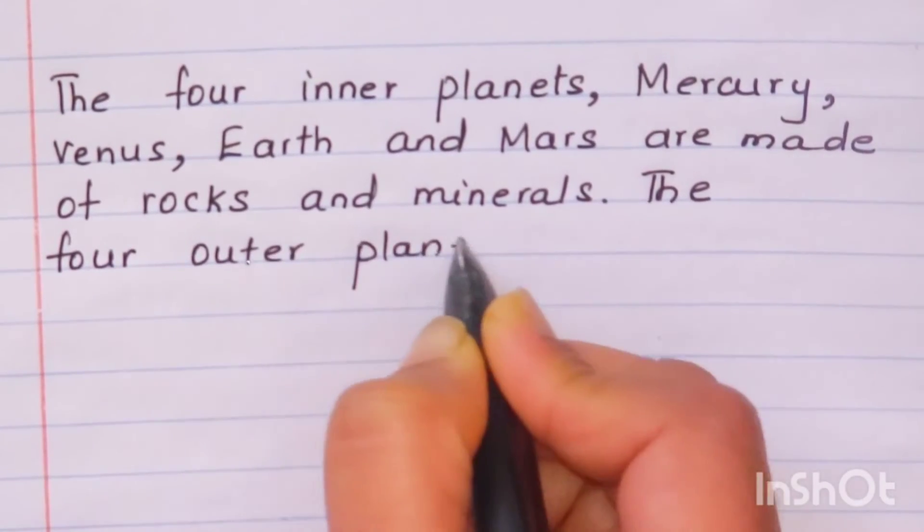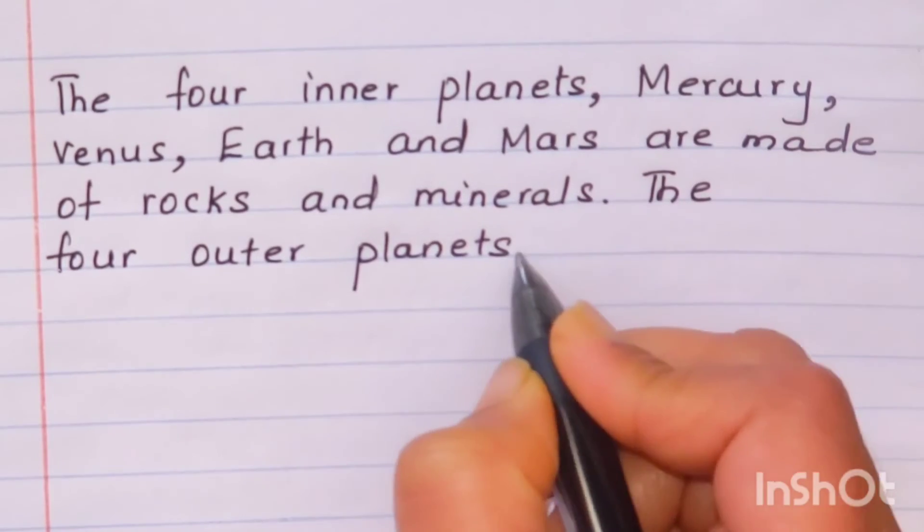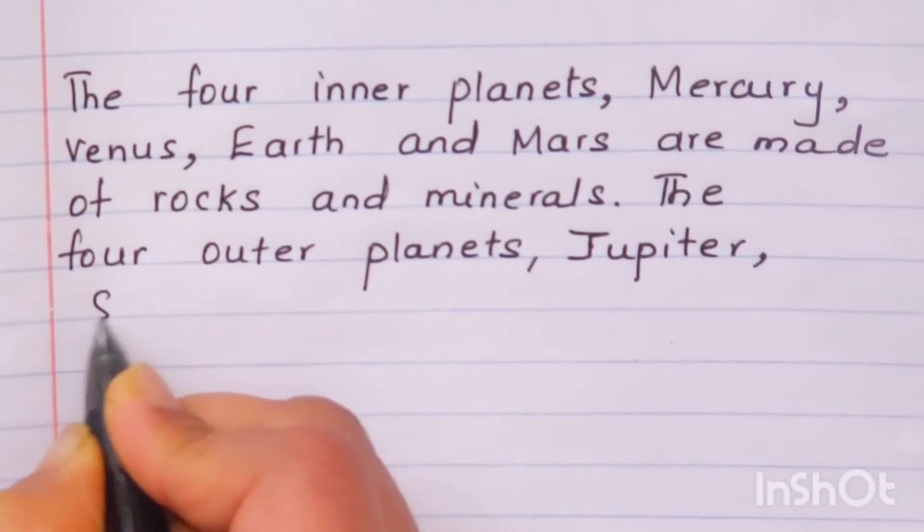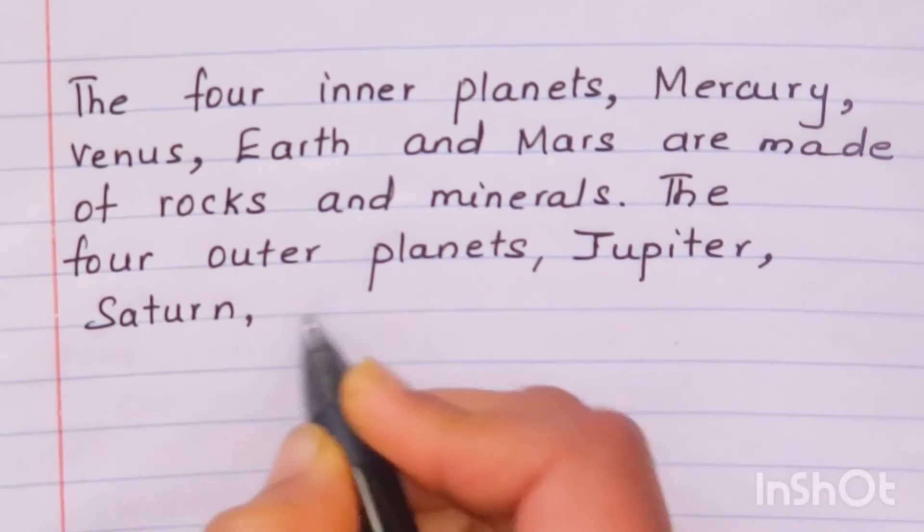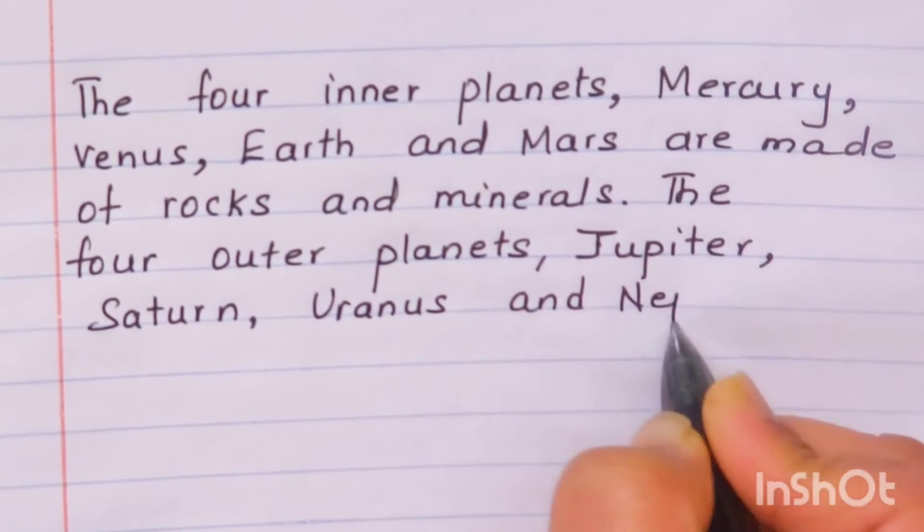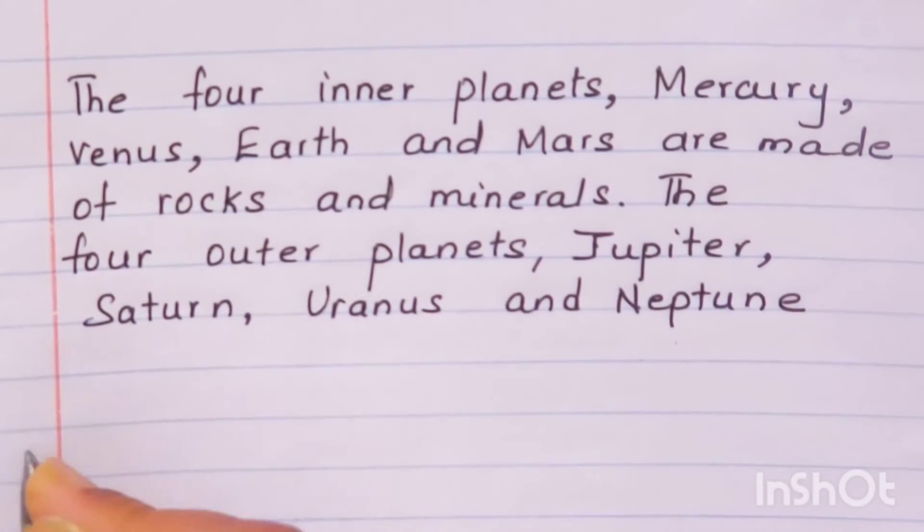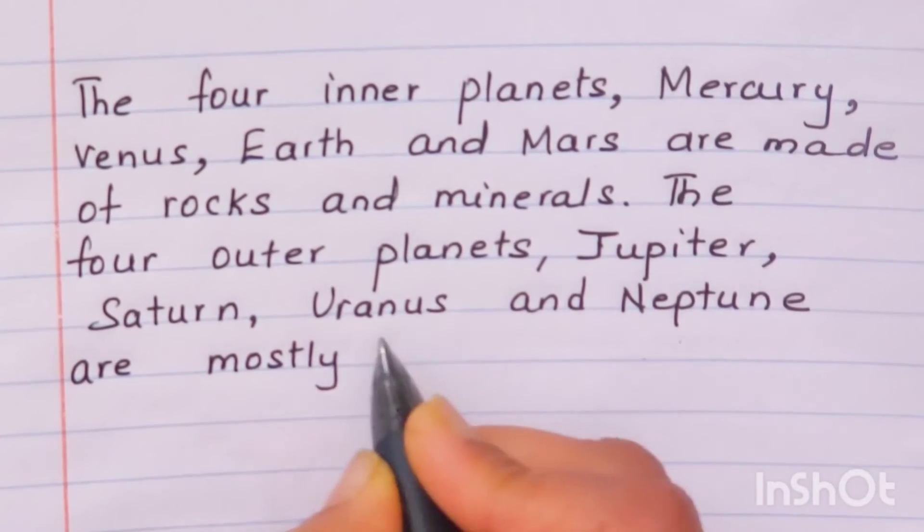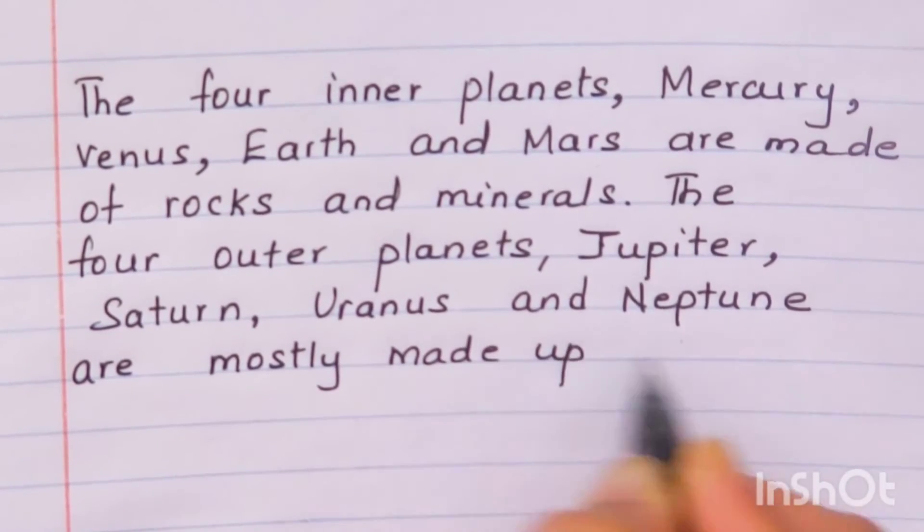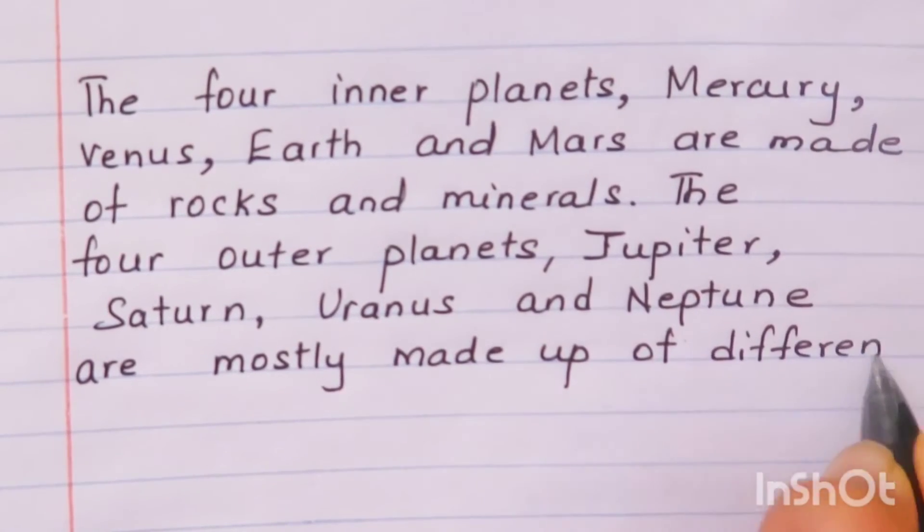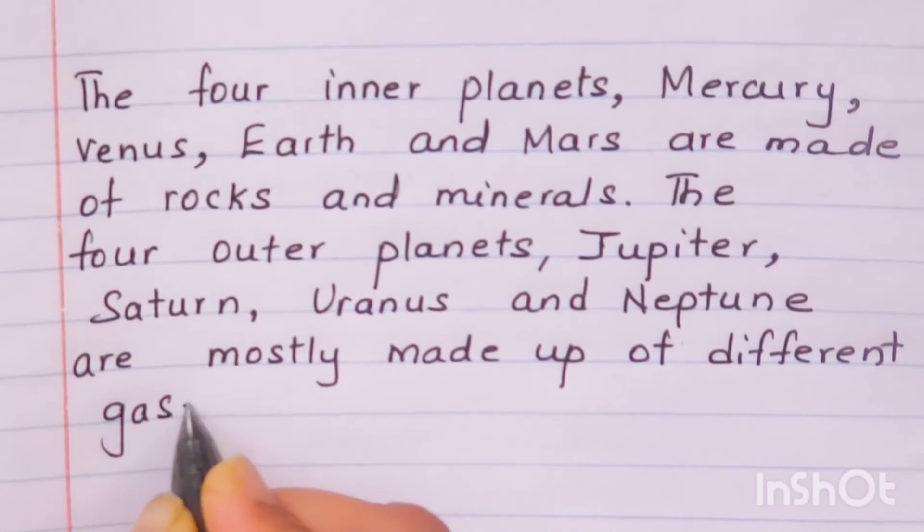The four outer planets, Jupiter, Saturn, Uranus and Neptune are mostly made up of different gases.